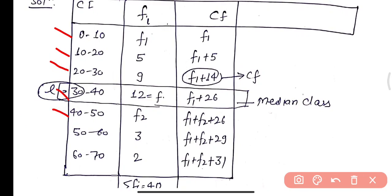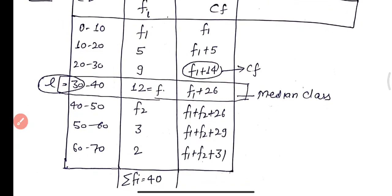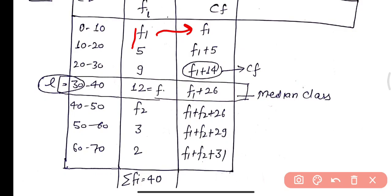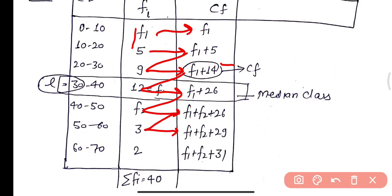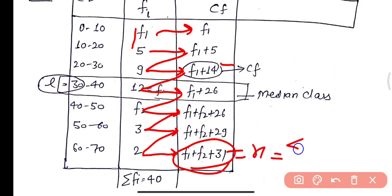We form the cumulative frequency (CF) column. The first entry is f1 as it is. Then f1 + 5, then f1 + 5 + 9 = f1 + 14, then f1 + 14 + 12 = f1 + 26, then f1 + 26 + f2 = f1 + f2 + 26, then f1 + f2 + 29, and finally f1 + f2 + 31. This last entry must equal n, the summation of fi.